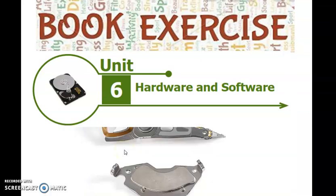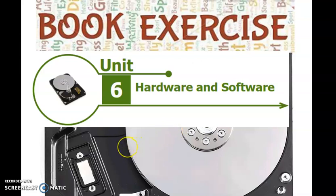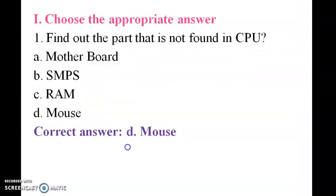Good morning students, today we are going to see the book exercise of Unit 6 Hardware and Software for 6th standard. First one, choose the best answer: Find out the part that is not found in CPU.